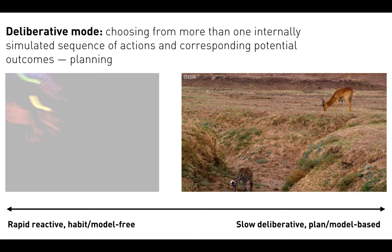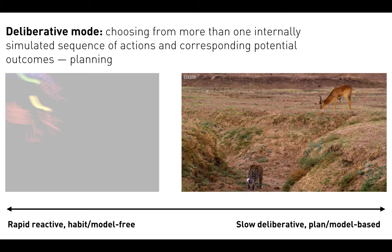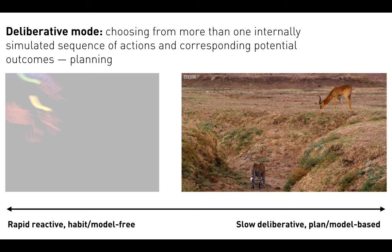One thing you'll notice about these two scenarios is that the reactive mode is dependent upon short visual sensory range, and deliberative mode has some relationship to longer visual sensory range. It's a remarkable fact of our evolutionary history — in the switch from life in water to life on land in the Devonian, 380 million years ago — that this same difference in sensory range pops up. Let me show you some data in support of that claim.